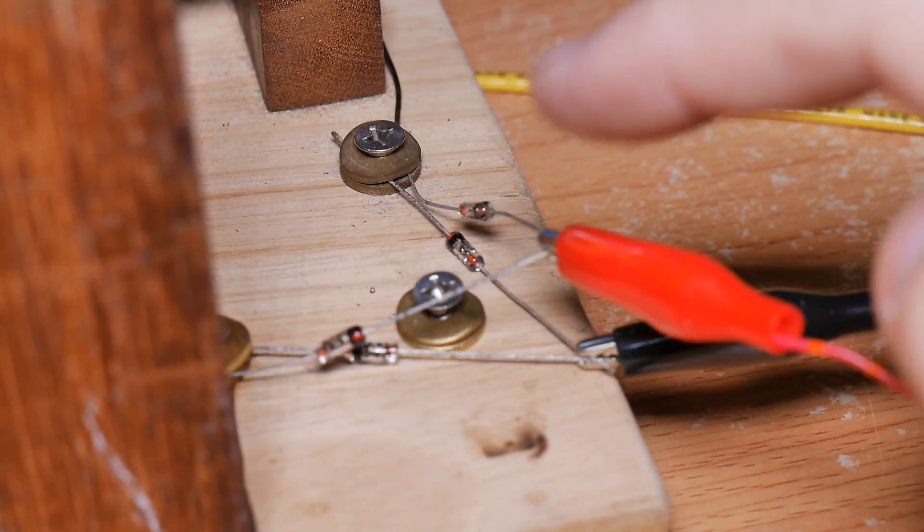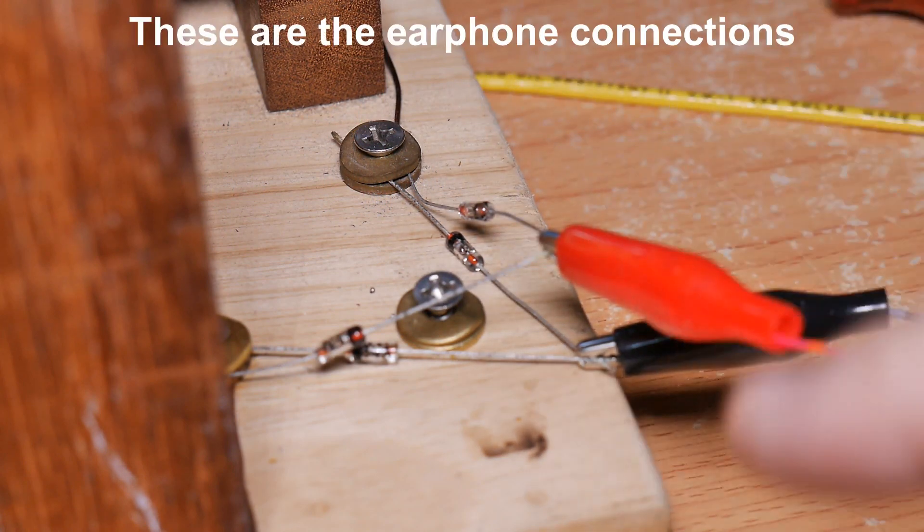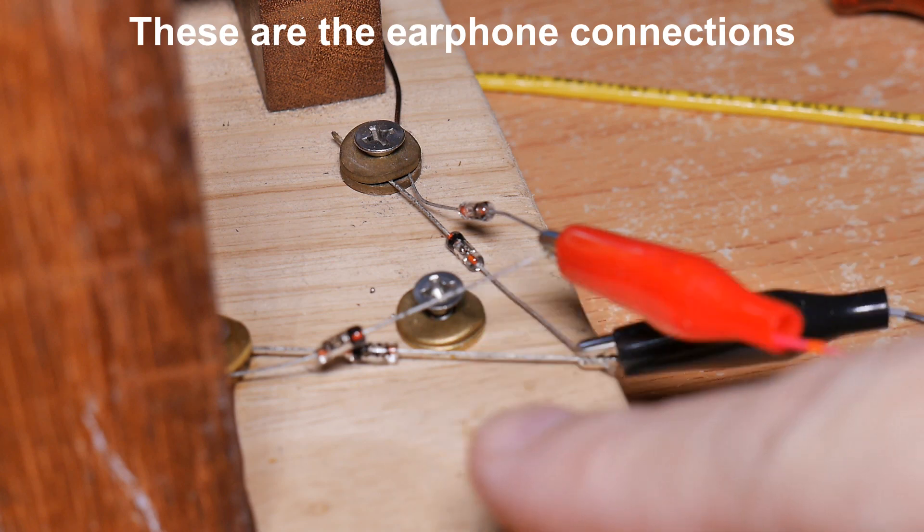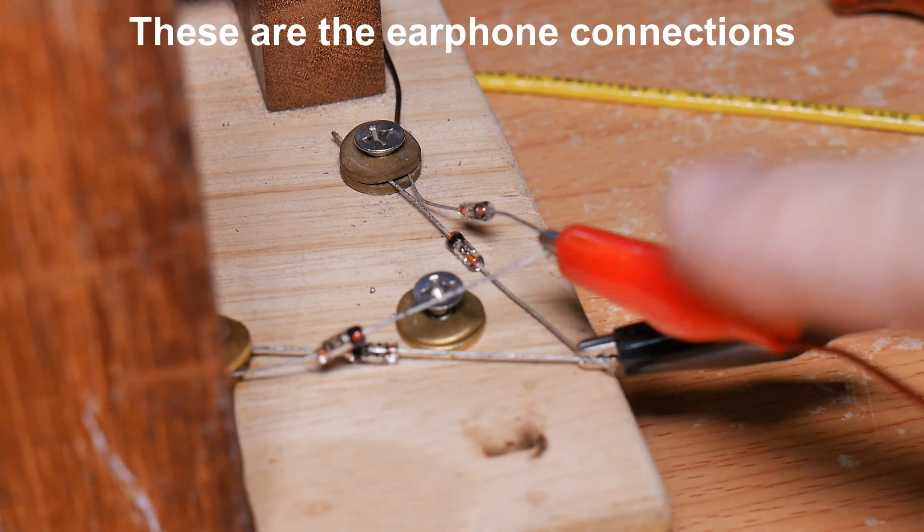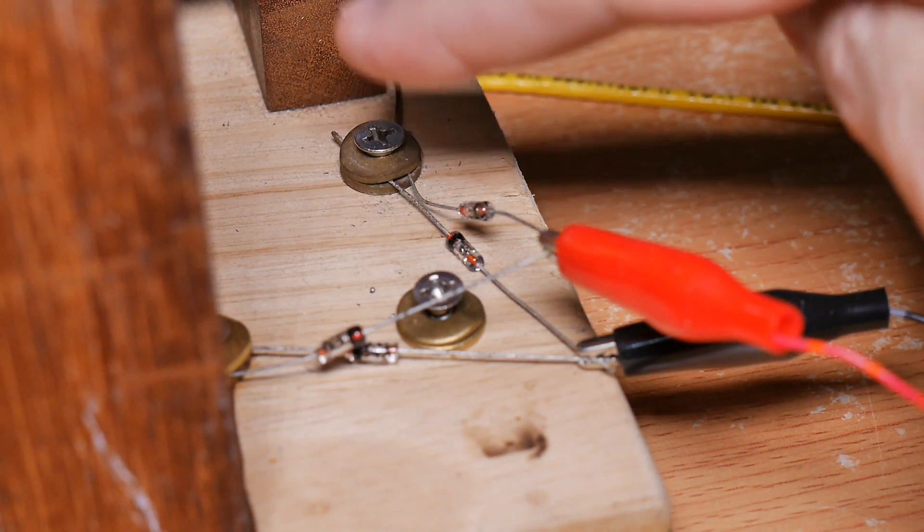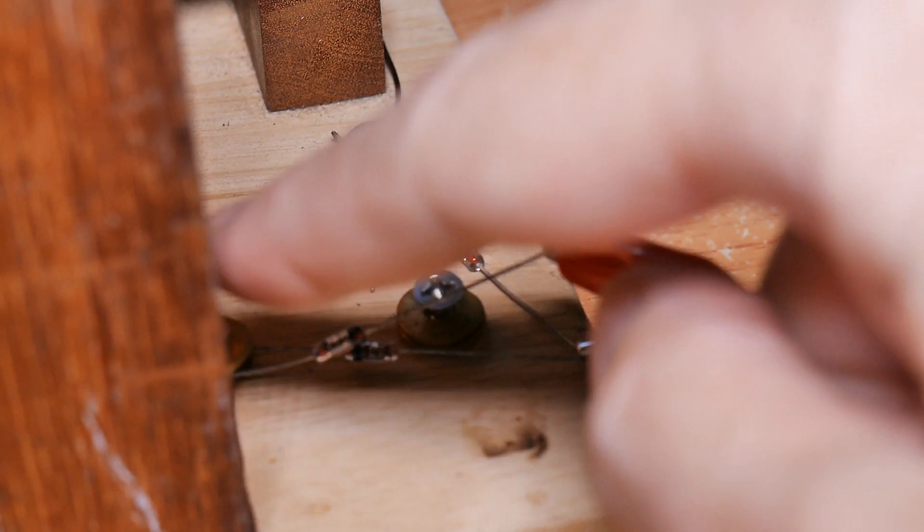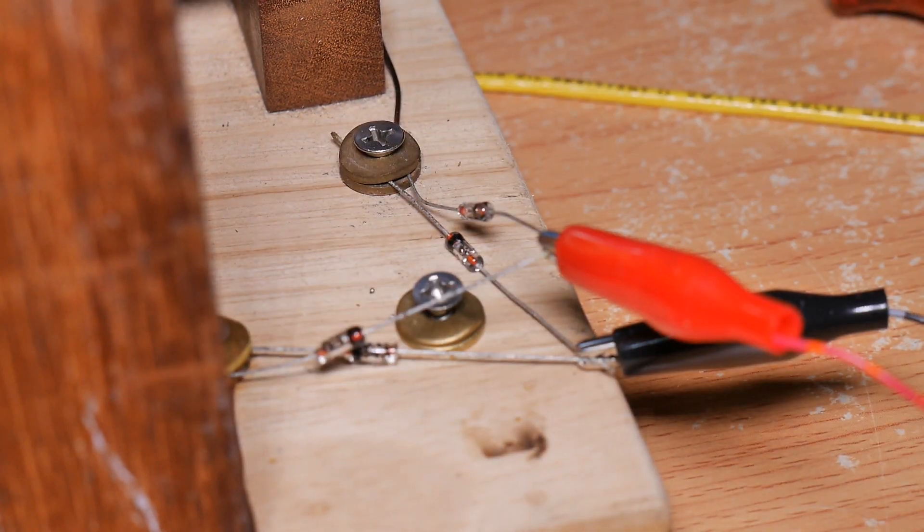This is our full wave bridge rectifier. You can see the banded ends are attached to the red alligator clip and the non-banded ends are attached to the black alligator clip. These go to the multimeter. The other end, one goes to one side of the tuning coil, and this goes to the other side of the tuning coil, the wiper side.